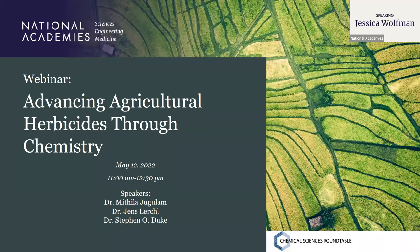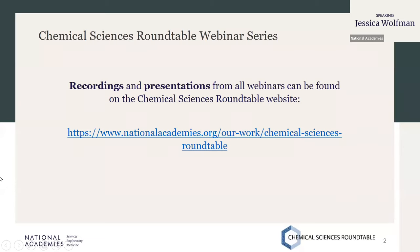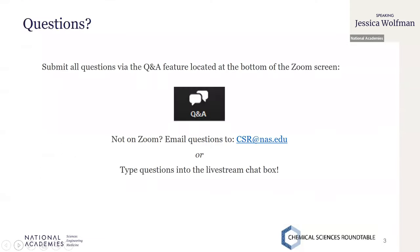This year, we are continuing our series of webinars on pressing topics affecting the chemical sciences. This webinar series is entering its third year, and all of the presentations and recordings from 2020 and 2021 are available on the CSR website. Today, we will discuss the nature and magnitude of herbicide resistance and explore opportunities through chemistry and needs to better control weeds in agriculture.